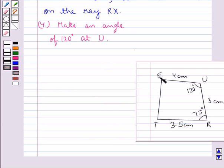Now our next step is to locate the point E, where UE is 4 cm. So in the next step, we write, taking U as the center, and radius 4 cm.